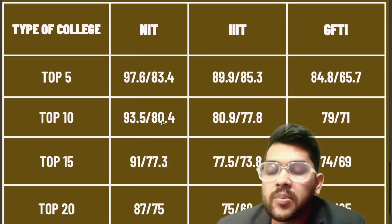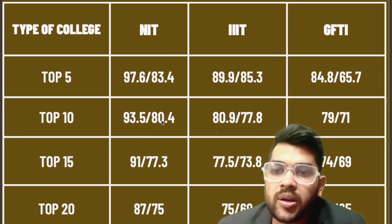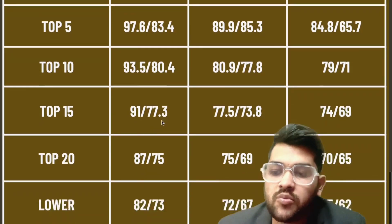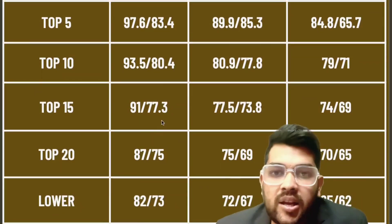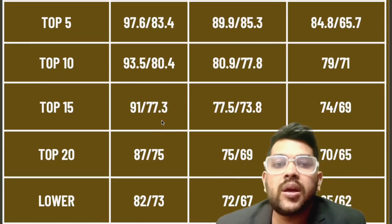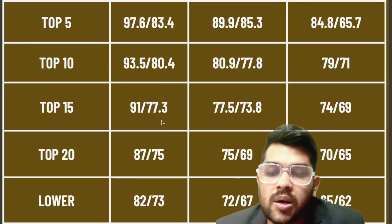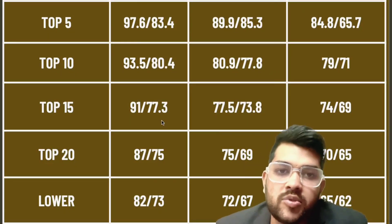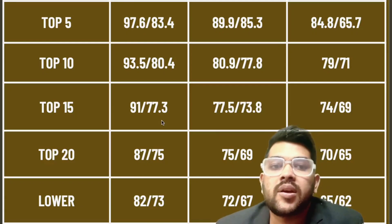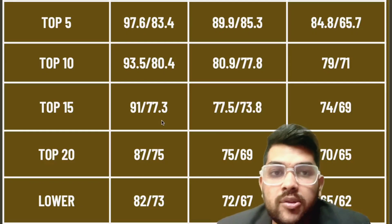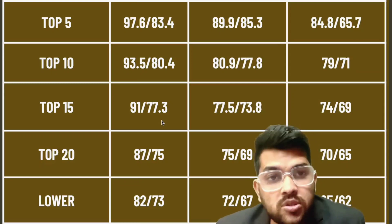For top 15 NITs, 91 percentile for CSE and 77.3 for lower branch. For top 15 Triple ITs, 77.5 and 73.5. For top 15 GFTIs, 74 and 69. For top 20 NITs, 87 for CSE and 75 for lower. For top 20 Triple ITs, 75 and 69. For top 20 GFTIs, 70 and 65.